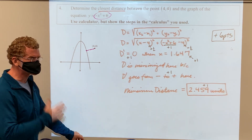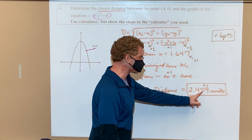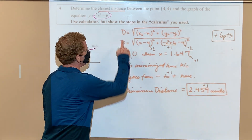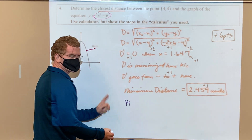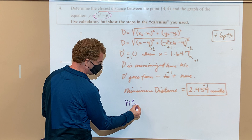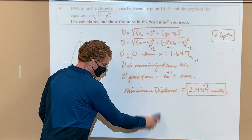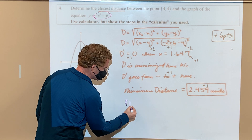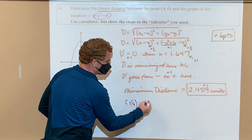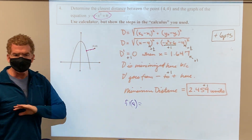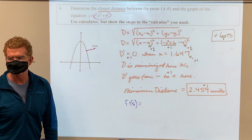Plug it back in—2.4. If I had an 84, I would have already had that saved as x. I'd come back and go to the calculate part, go Y1 of X, and it spits that out. If I had an Nspire, your function would have been F1, I would have stored that as an A, and I would have done F1 of A, and it would have spit that out. So don't ever bother trying to put that back in the original one—it's just a waste of time.